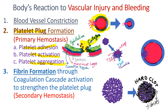Then the platelets are activated. The activated platelets change shape to make them ready for aggregation and release contents from the granules. Then activated platelets start to aggregate to form a platelet plug. This process of platelet plug formation is called primary hemostasis.